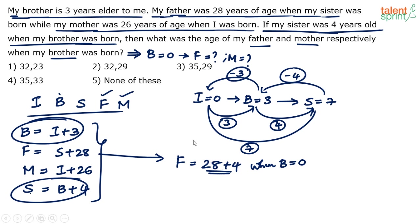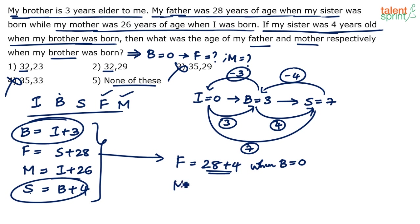Look at the options immediately and eliminate wrong ones. Father's age has to be 32 — options 1 and 2 satisfy this; options 3 and 4 are ruled out. We still need to find mother's age to choose between options 1 and 2.